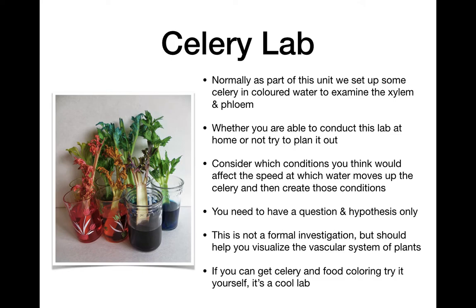Students have tried removing all the leaves, cutting holes, changing the stem size, removing or adding light, or putting it in a windy versus sheltered spot. The food coloring lets you see how water moves up the plant. I recommend using blue, purple, or red food coloring — yellow and green don't show up clearly. You need to do a question and hypothesis regardless of whether you're actually doing it or not, then look at your results either by doing the experiment or by Googling — this lab is very common online.